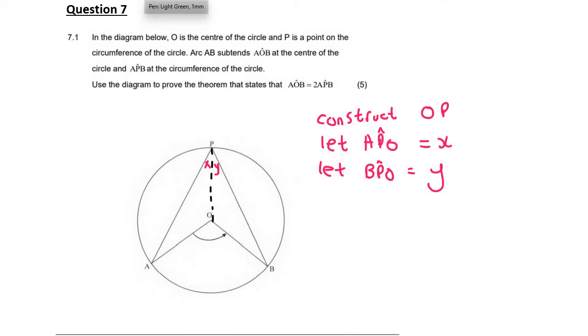Now, what you should identify is that this is an isosceles triangle where the two radii are going to be the same. And so that means that this angle down here would also be X. But we need to show them that.